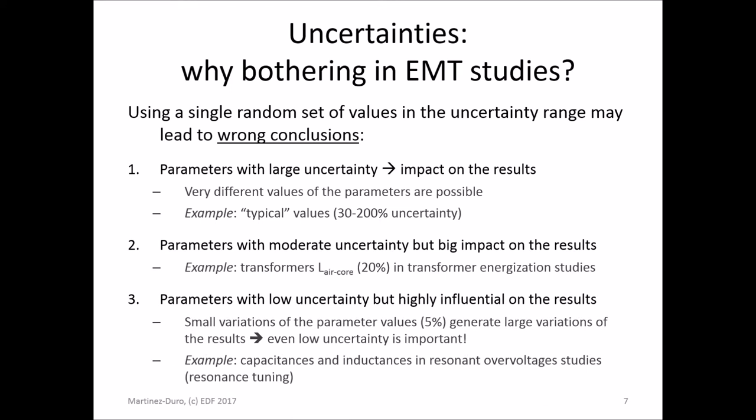The third case is that even when parameters are very well known with small uncertainty — say 5% — in some cases, very small variations of these parameters lead to very high variations of the results. This is typical of studies dealing with resonances, where very small variations of capacitances or inductances can completely change, for example, the overvoltage.